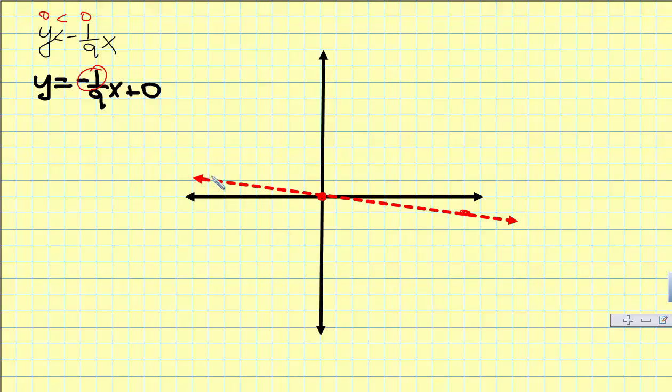The next part is that this dotted line cuts this whole space into two halves. Either the top half is going to be true or the bottom half is going to be true, and the quickest way to figure it out is just pick a test point.